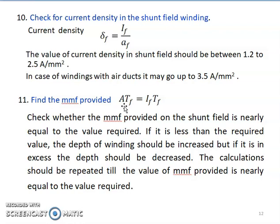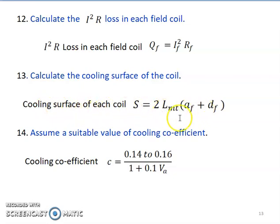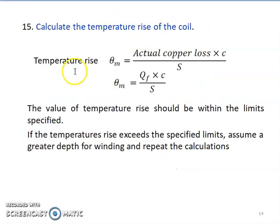Next is the calculation of copper loss: Qf = If² × Rf. Then calculate the cooling surface of the coil using the appropriate expression, and assume a suitable value of cooling coefficient, which is calculated using the peripheral velocity Va of the armature. Finally, calculate the temperature rise of the coil; the value should be within the permissible limit. If it exceeds the limit, assume a greater depth for the winding and repeat the calculation.